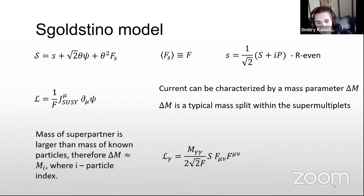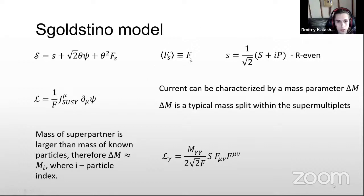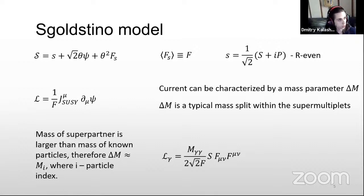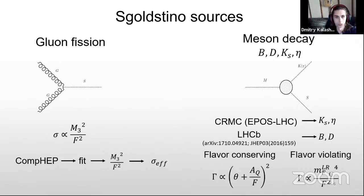In my work, I consider a simple model where only one chiral superfield gains non-zero supersymmetry breaking. After that, we have a Goldstone fermion and the scalar and pseudoscalar sgoldstinos. These sgoldstinos are even, so they can decay into pairs of standard model particles and be produced in scattering of two standard model particles.